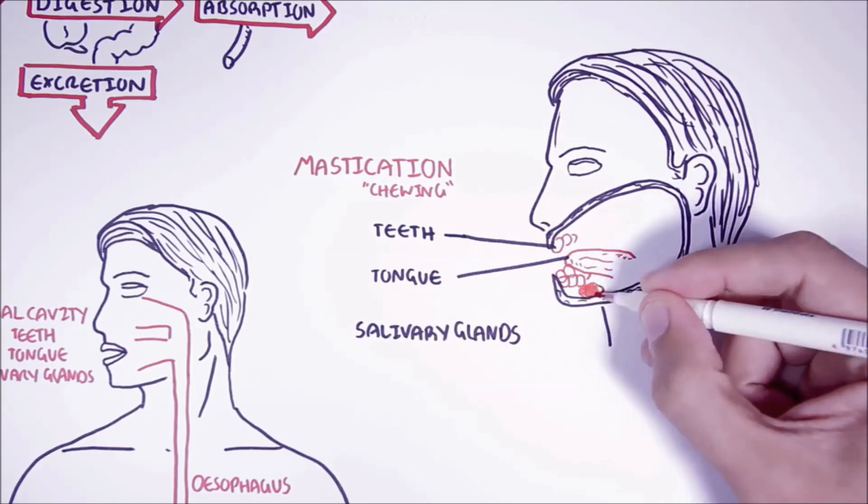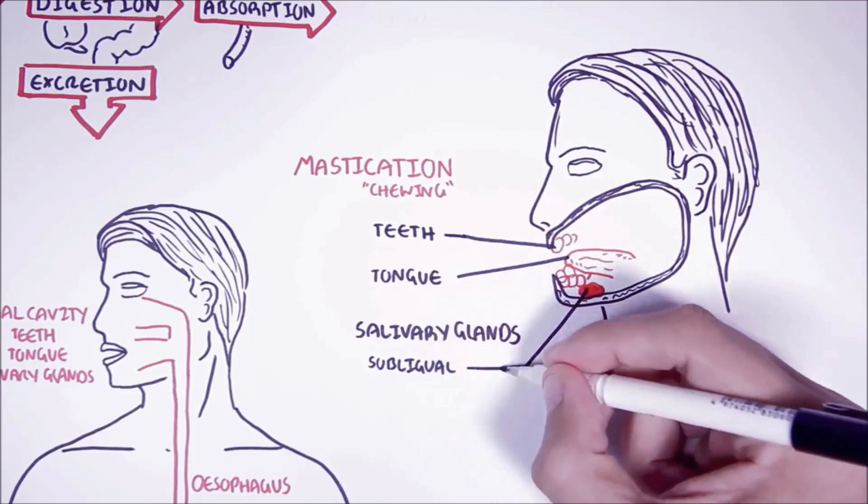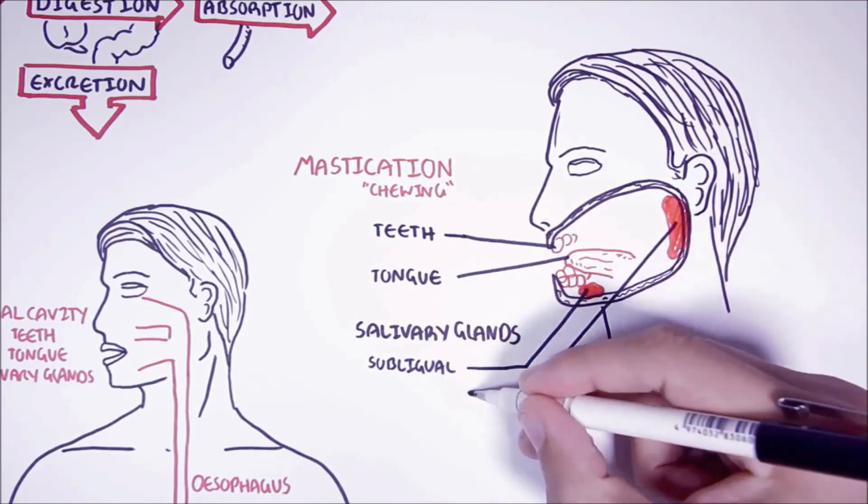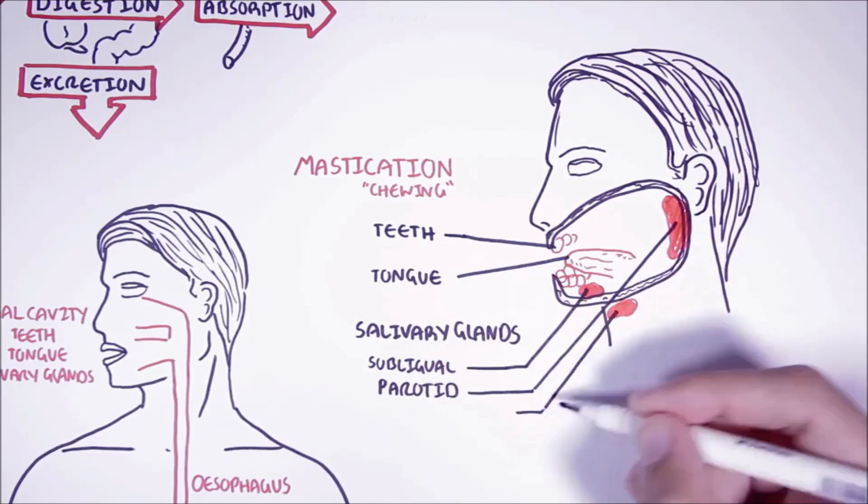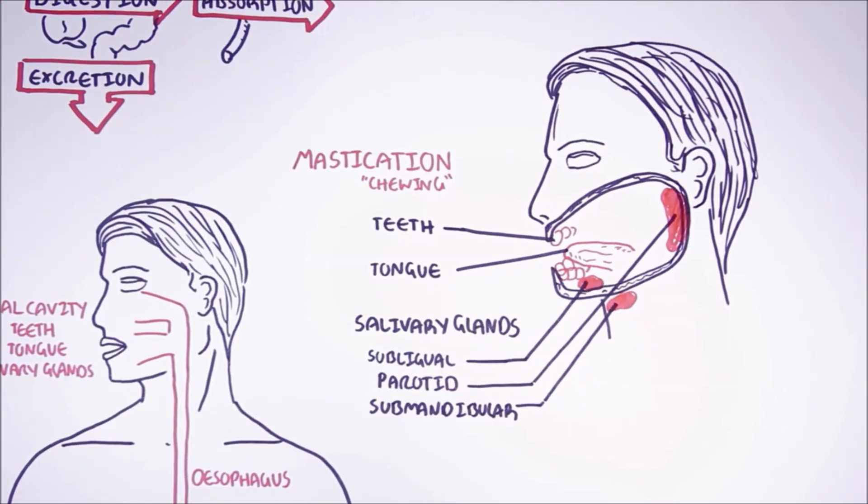There are three salivary glands: the sublingual, meaning below the tongue, parotid, and submandibular, which means below the mandible.